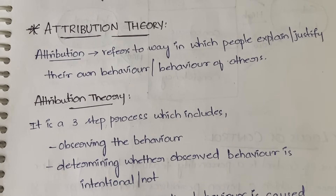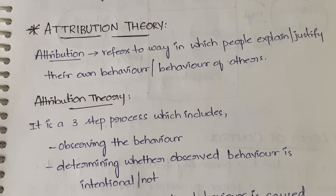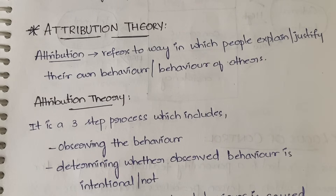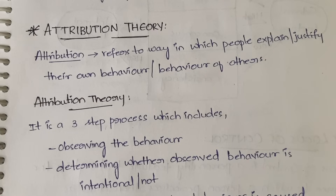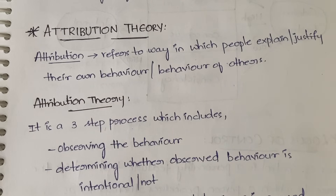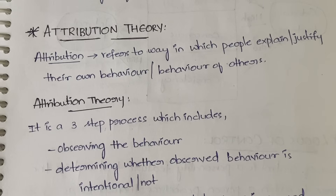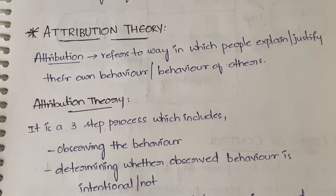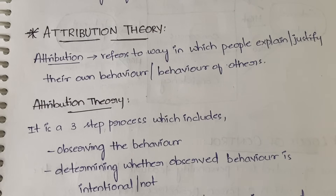For example, suppose you threw a chocolate wrapper on the road and somebody says what you did is wrong — how are you explaining or justifying that? Whether it may be good or bad, it applies not only to your own behavior but also to how you judge others. Some people will say he has no common sense, others will say maybe he was in a hurry or didn't notice, or maybe there was no appropriate garbage bin nearby.